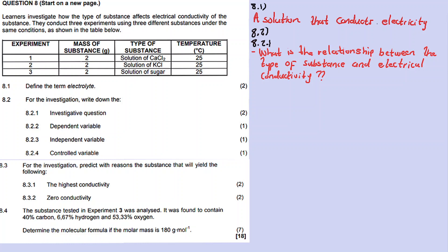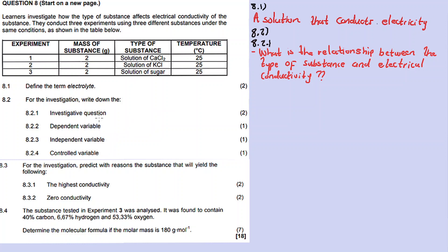Question 8.2.2 asks for the dependent variable and the independent variable. The dependent variable is the variable which you have no control over - it is the outcome of the investigation. The independent variable is the one that you change, the one you have control over.